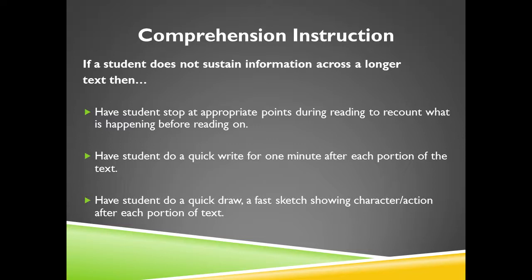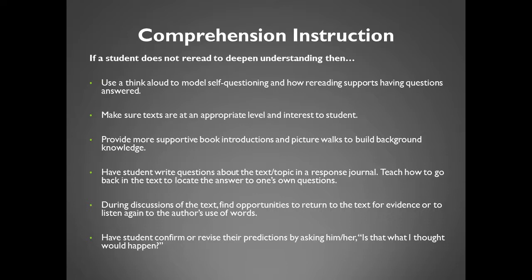If a student does not sustain information across a longer text, then have the student stop at appropriate points during reading to recount what is happening before reading on. Have the student do a quick write for one minute after each portion of the text. Have the student do a quick draw — a fast sketch — showing character and action after each portion of the text. If a student does not reread to deepen understanding, then use a think aloud to model self-questioning and how rereading supports having questions answered. Make sure texts are at an appropriate level and of interest to the student. Provide more supportive book introductions and picture walks to build background knowledge. Have the student write questions about the text topic in a response journal. Teach how to go back in the text to locate the answer to one's own questions. During discussions of the text, find opportunities to return to the text for evidence or to listen again to the author's use of words. Have the student confirm or revise their predictions.